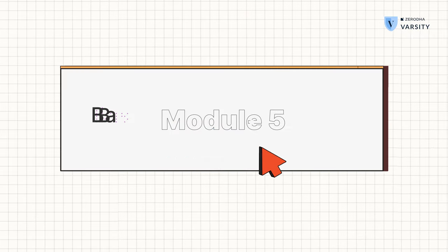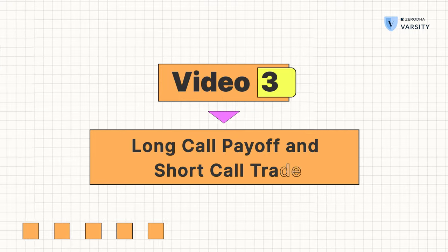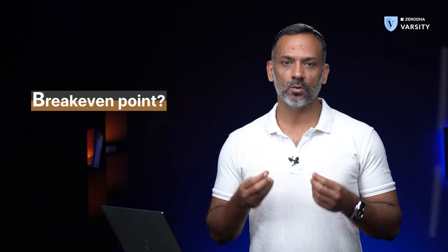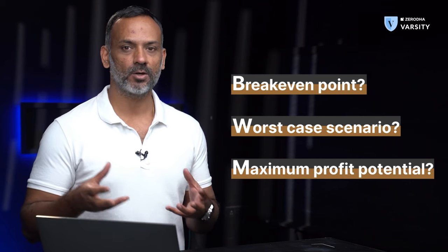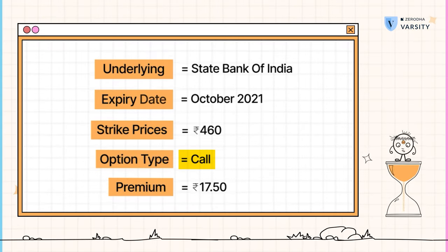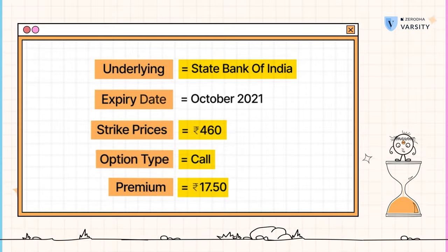Hi, my name is Karthik Rangappa. In this video we will understand the payoff structure of a call option both from the buyer and the seller's perspective. In the previous video we posted few questions about the profitability of a call option buyer — the questions were around the breakeven point, what is the worst case situation, and what is the maximum profit potential. We bought the call option of SBI at 17 rupees 50 paisa, with a strike price of 460. Let's try and get the answers for all these questions.